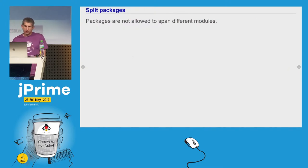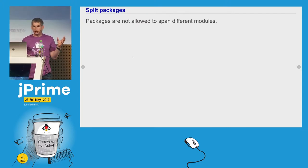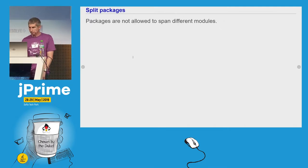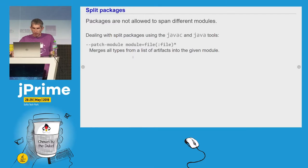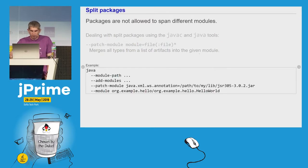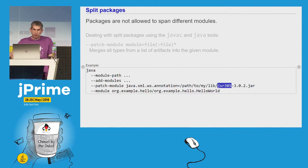Let's talk a bit about split packages. A package with the same name is not allowed to appear in two different modules, but we sometimes have the situation where two artifacts contain the same package. The javac and java tools provide us the patch-module option. With this option, we say that all classes from a list of artifacts should be merged into a given module. For example, with this command we say that all classes from the JSR 305 jar should be merged into the java.xml.ws.annotation module.